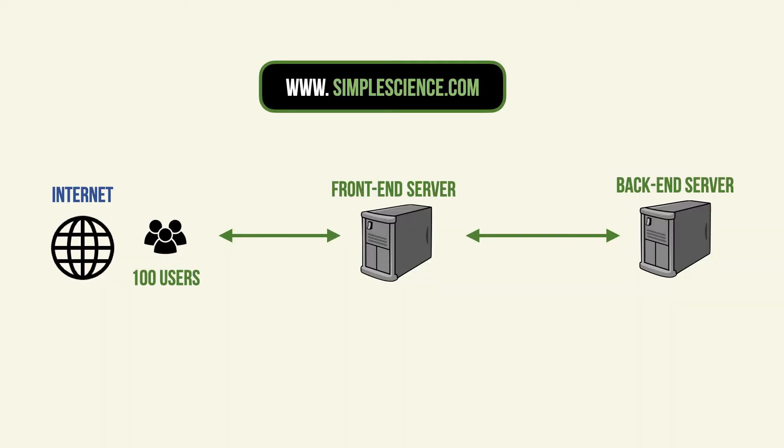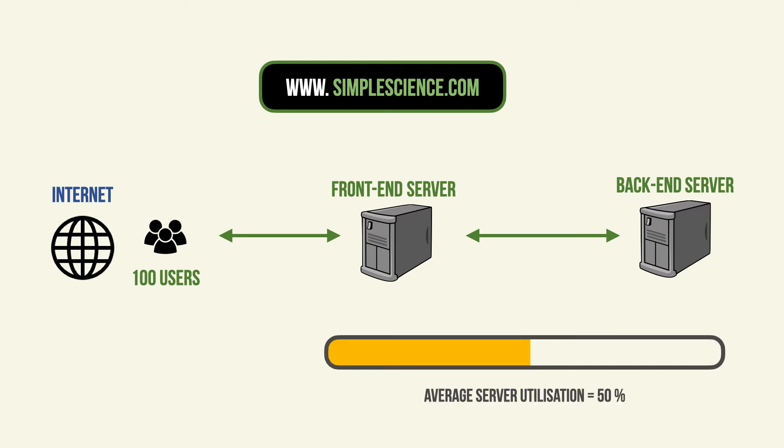We've literally got two servers, and depending on their specs — how strong the CPU is, the RAM, and the disk space — they're able to serve up to a number of users at once. Let's say they're able to serve 100 users at once. I'm going to introduce the concept of server utilization, which shows how much of the computing power — CPU, RAM, GPU, and disk — you're using to serve the web content. A good number to maintain would be about 50%.